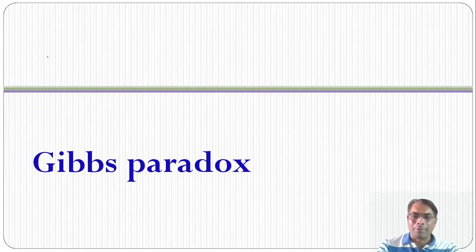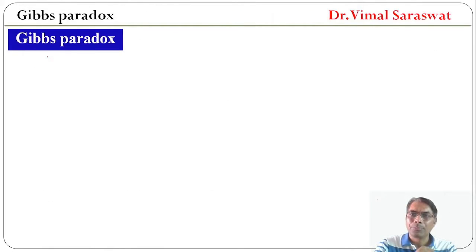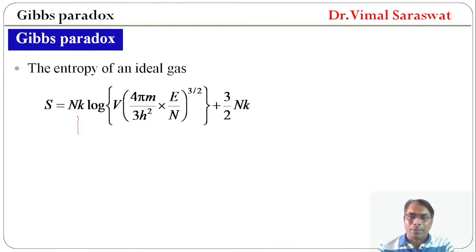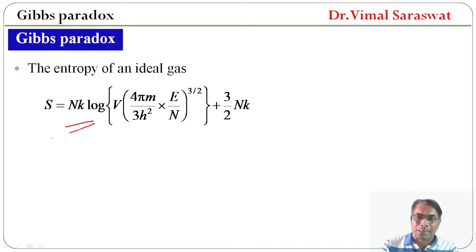Here we will discuss about Gibbs Paradox. The entropy of an ideal gas is given by S = NK log(V · (4M·π / 3H²) · (E/N)^(3/2)) + (3/2)NK. This formula we have derived in our last lecture and the link of that lecture is given in the description box.